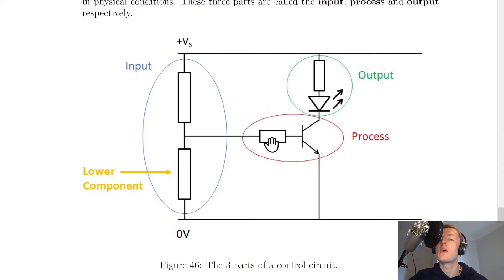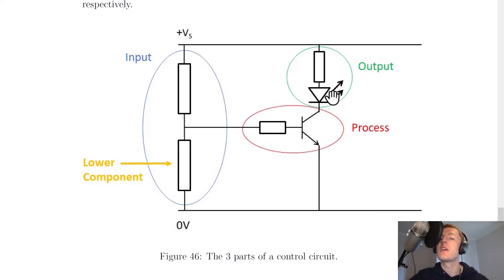You'll notice that we have a transistor in series with a resistor, and this transistor is going to be the processing part. Lastly, we have the output, which is the thing that you want to happen in the end. So here we've got an LED with a resistor, and this is the thing that we want to switch on or off.